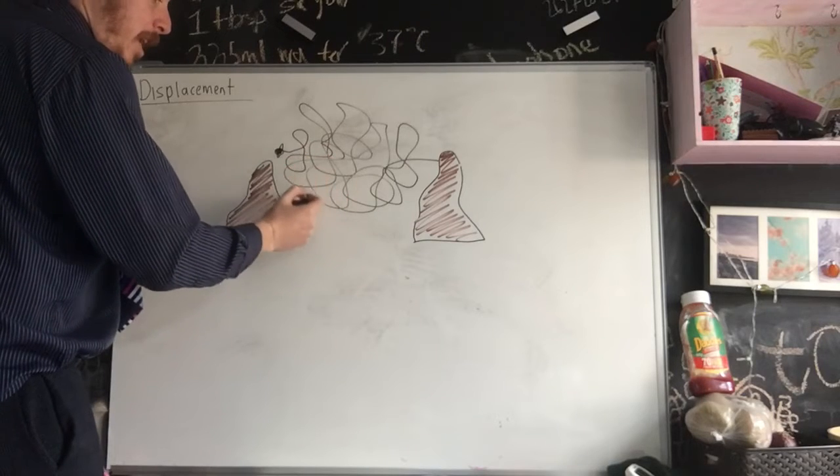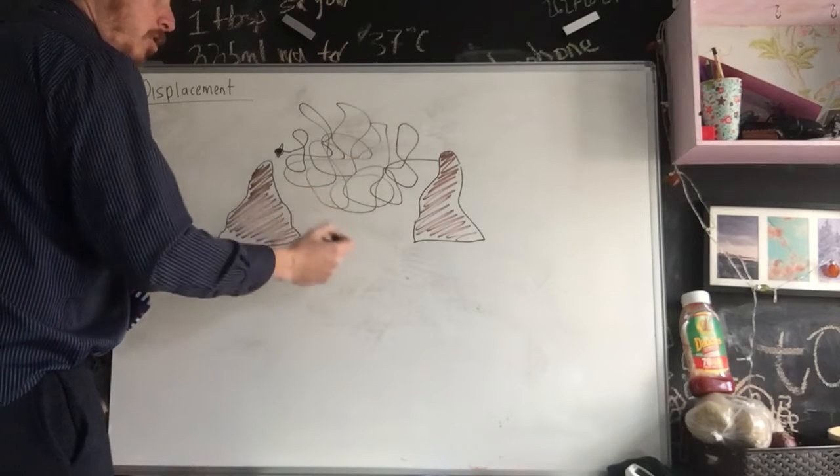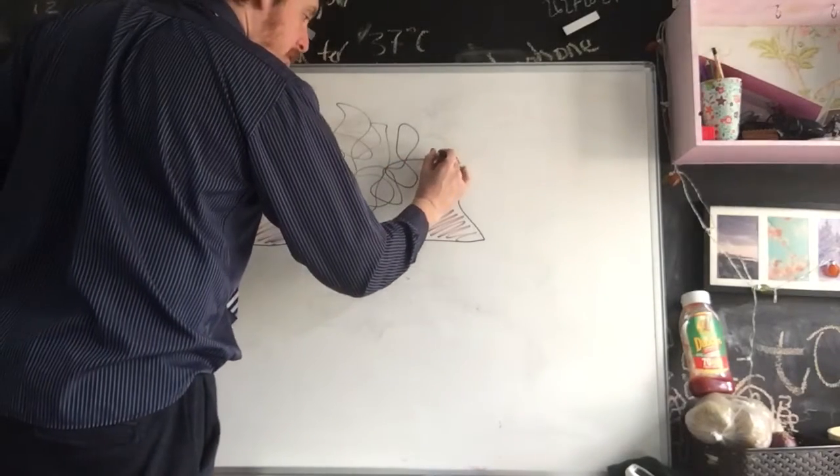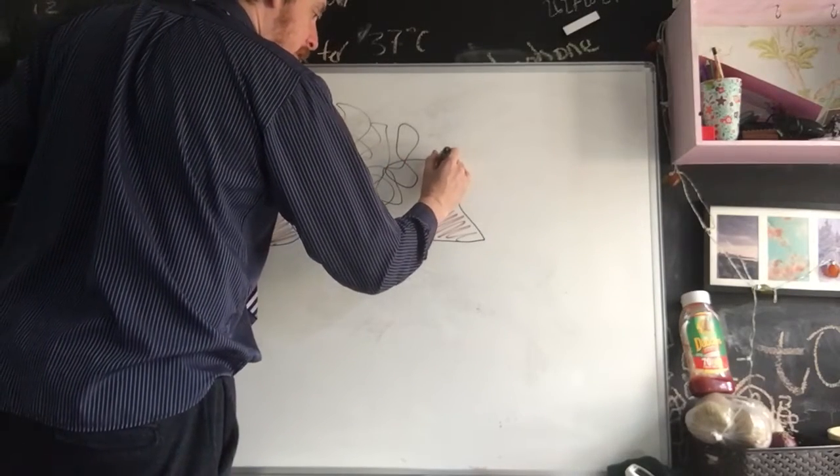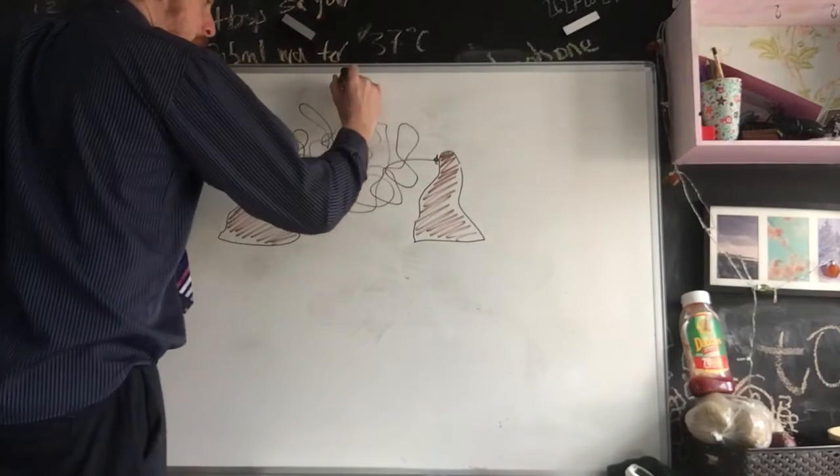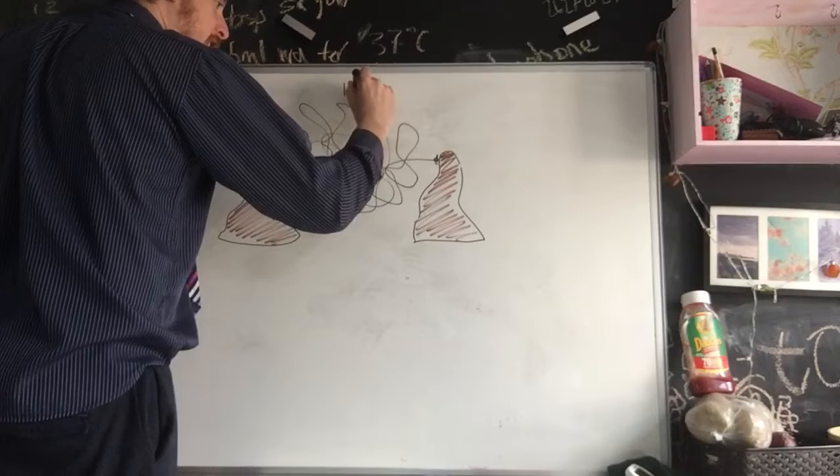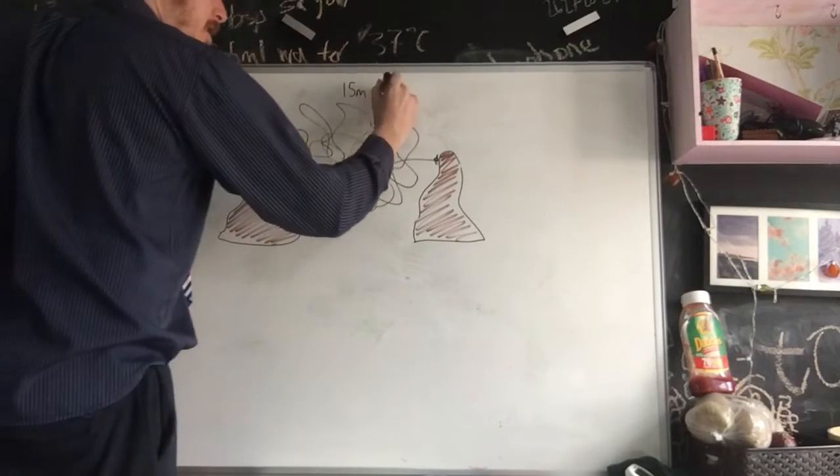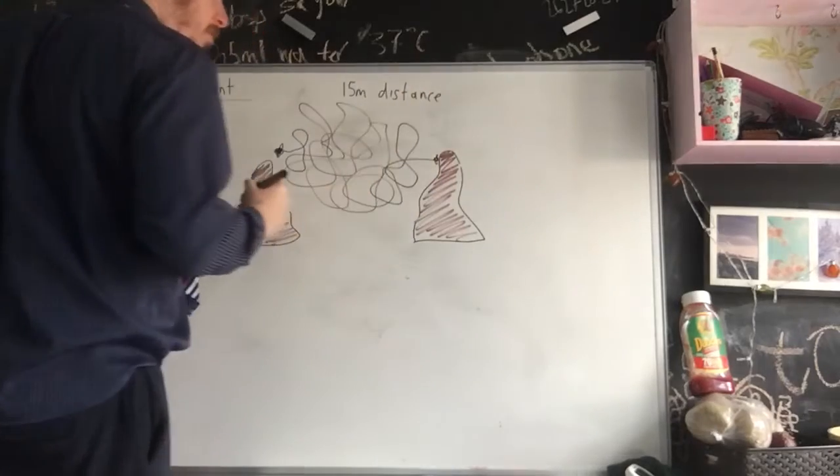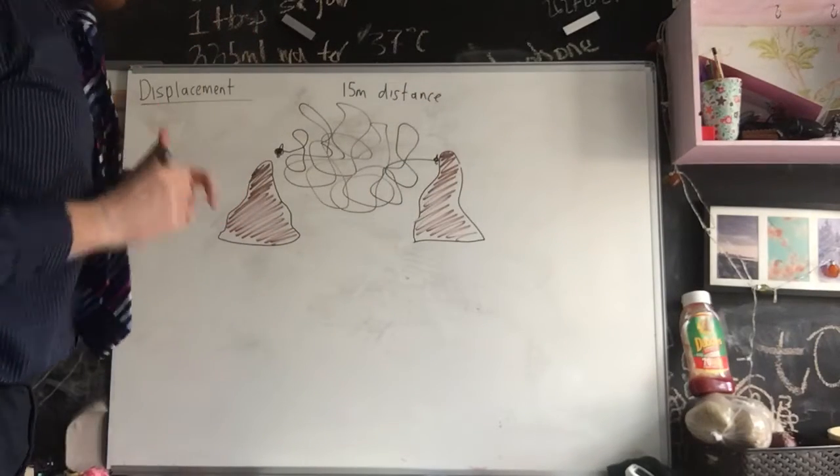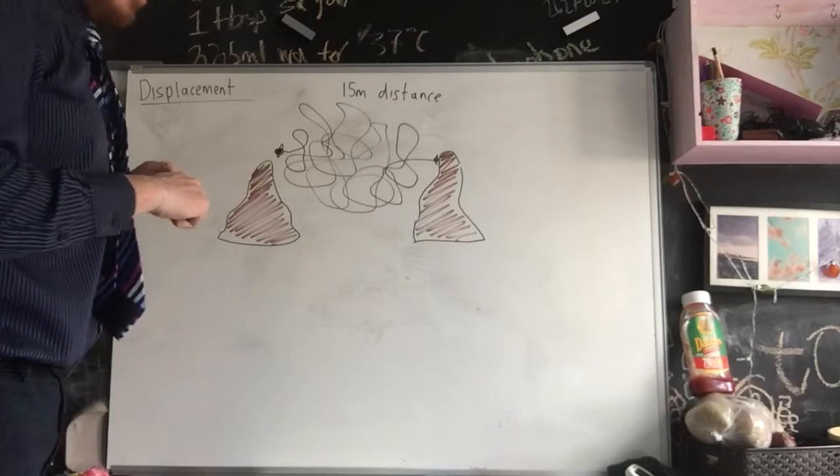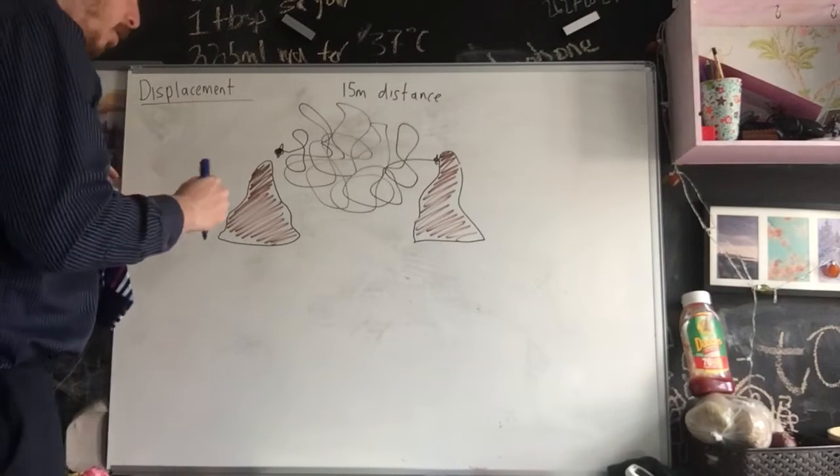...that the fly has traveled to go from point one to point two. Okay, and that fly in that process may have gone 15 meters distance. Okay, now how does displacement differ? Displacement is distance in a set direction, so...